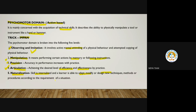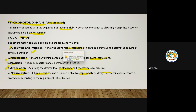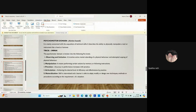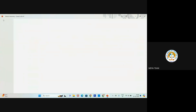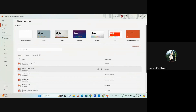So this was Bloom's taxonomy. Any doubt? The trick IMPAN: I for imitation, M for manipulation, P for precision — yes, got it. Most of them are acronyms, ma'am — it is easy to learn now.